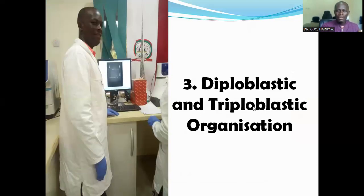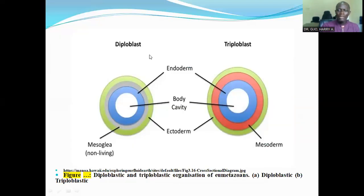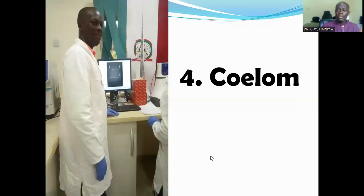I want to look at another feature, which is the diploblastic and triploblastic organization. Organisms can either be diploblastic or triploblastic. Diploblastic organisms have two germ layers — they have the endoderm and the ectoderm only, but they have a non-living part called the mesoglea. Then the triploblastic organisms have three body layers: they have the ectoderm, the mesoderm, and the endoderm. The diploblastic and triploblastic nature is also a criterion for the classification of animals.